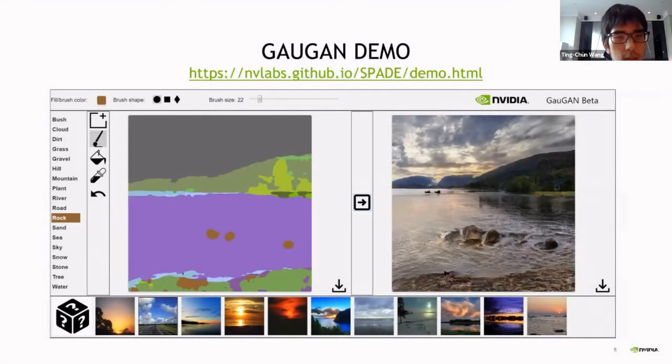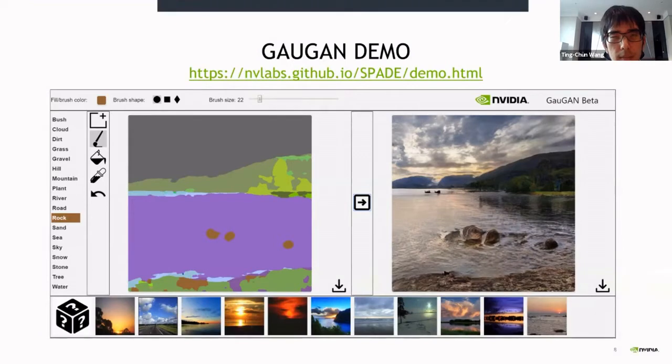This is the GauGAN demo that we've just seen in the video. It's still running at this website, this URL. So in case you're interested, you can go ahead and give it a try yourself. The interface of the app is like this. On the left hand side, you can see all the different categories that you can choose from. And then in the middle is the canvas that you can draw. You can choose your brush shape and your brush size. You can also fill in different regions. And then after you click the convert button, the output image should show on the right, as shown here. In case you are not satisfied with this image, you can also steal the styles from different images on the bottom here. So if you want your image to look more reddish or blueish, you can steal the styles from these example images.